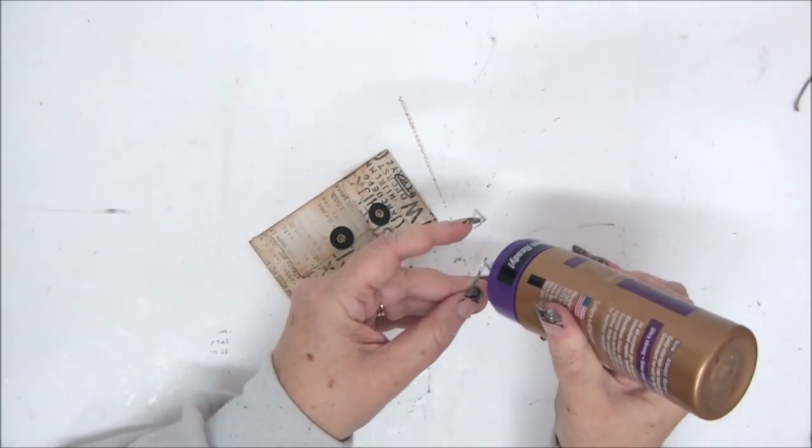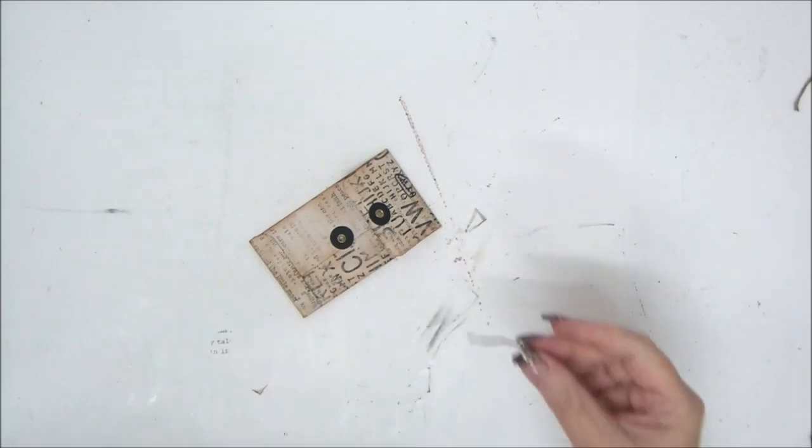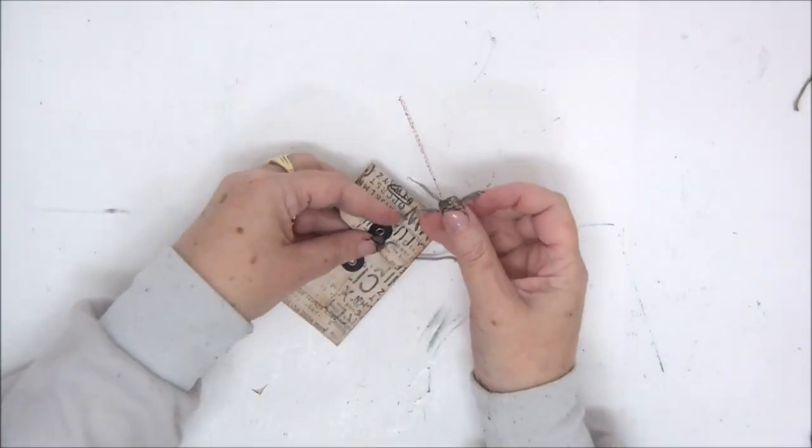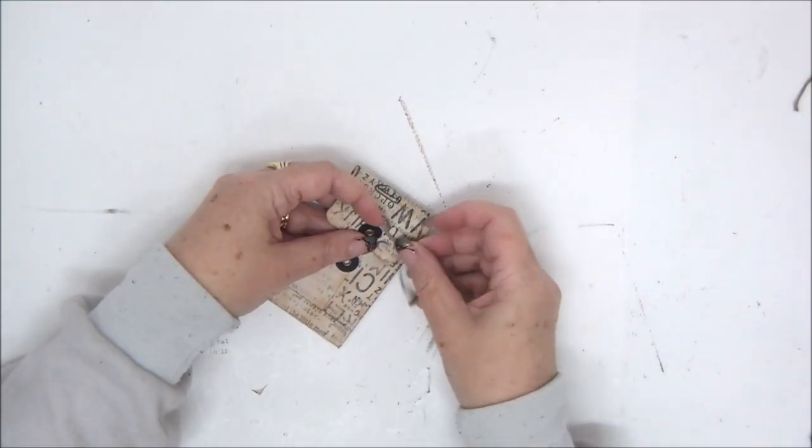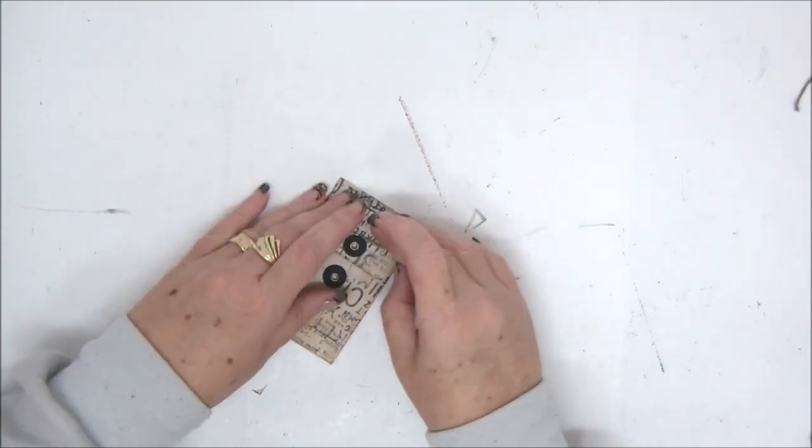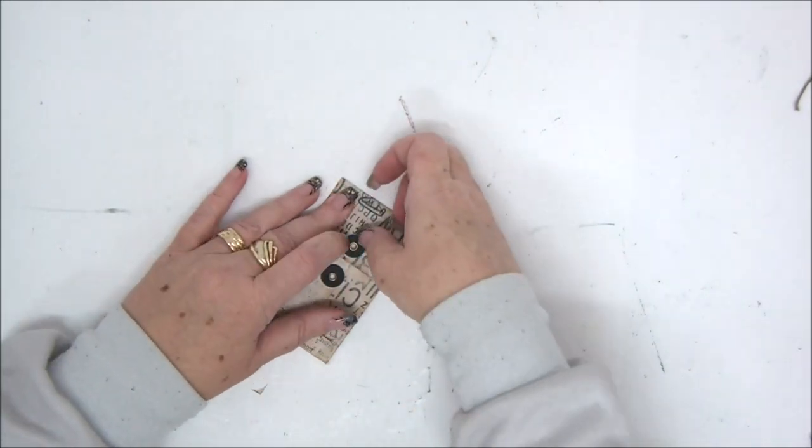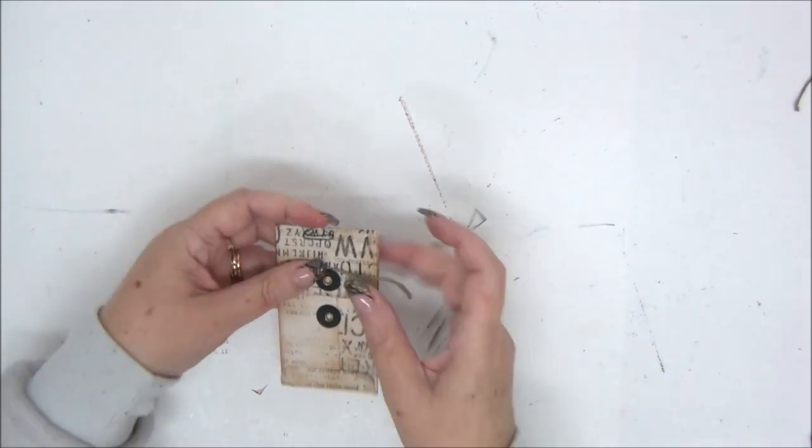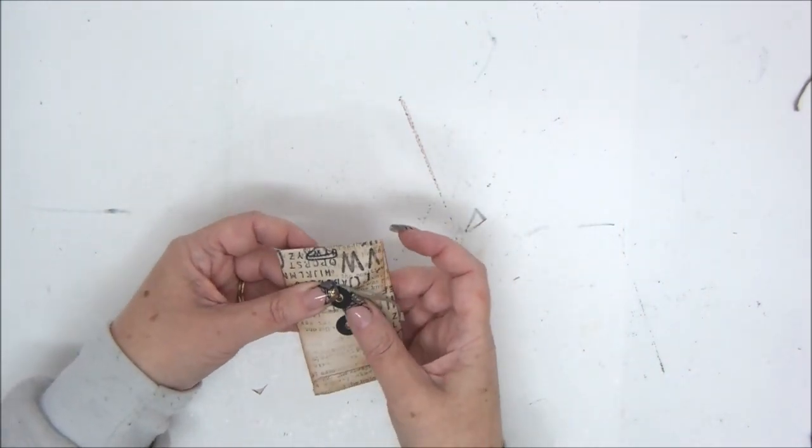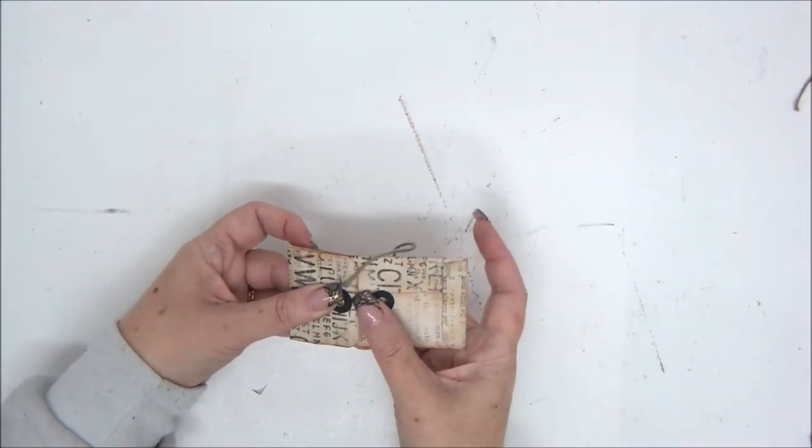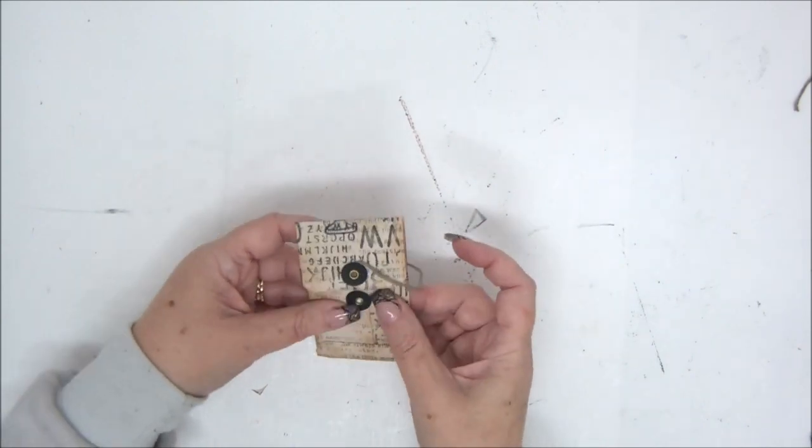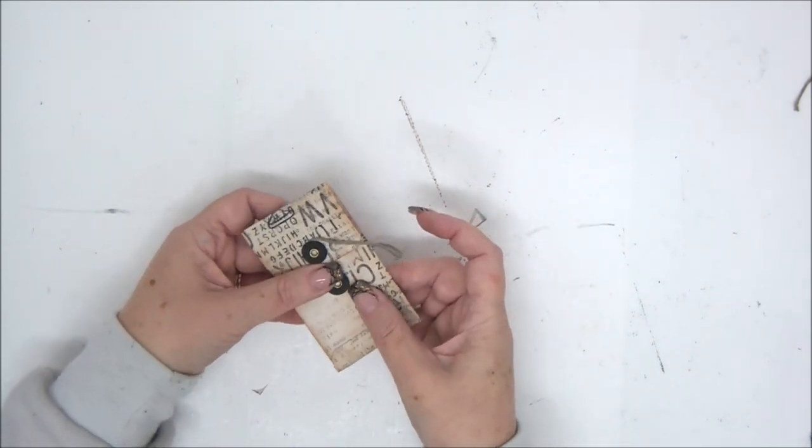And tucking it under the top circle where the eyelet is. And then just raising the edges of the circle so it will be easier to insert the twine and loop it around for the first time.